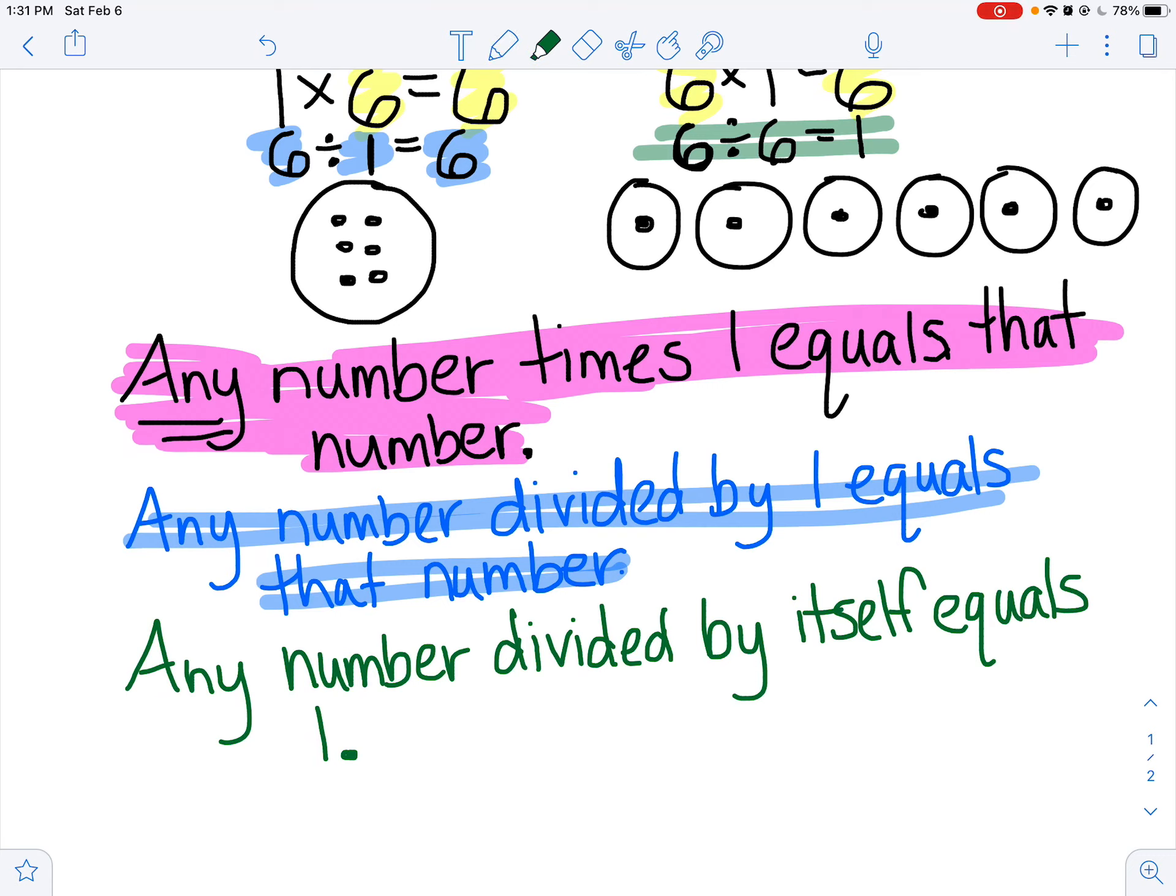So these are some really basic, important rules that you need to know about multiplication and division with 1s and 0s. Any number times 1 will equal that same number. Same rule with the division. Any number divided by 1 will still equal that number. And then conversely, on the other hand, any number divided by itself will give you 1.